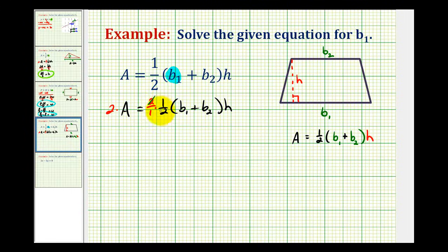And now on the right side, these two simplify out. So this simplifies to one. So we have two A on the left.